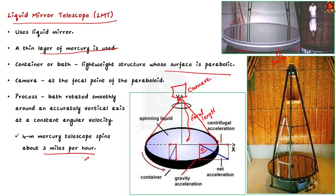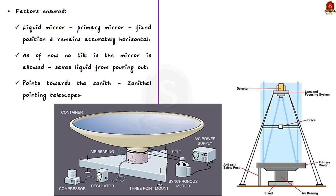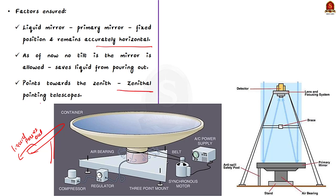Let us see certain factors ensured in the liquid mirror telescope. First, the liquid mirror acts as a primary mirror — that is, it collects and focuses the incoming light in a reflecting telescope. Second, the mirror has a fixed position. Third, the mirror has to remain accurately horizontal and cannot be tilted. This ensures that the liquid does not pour out and it always points towards the zenith — that is, directly overhead. Because of this, liquid mirror telescopes are also called zenithal pointing telescopes.